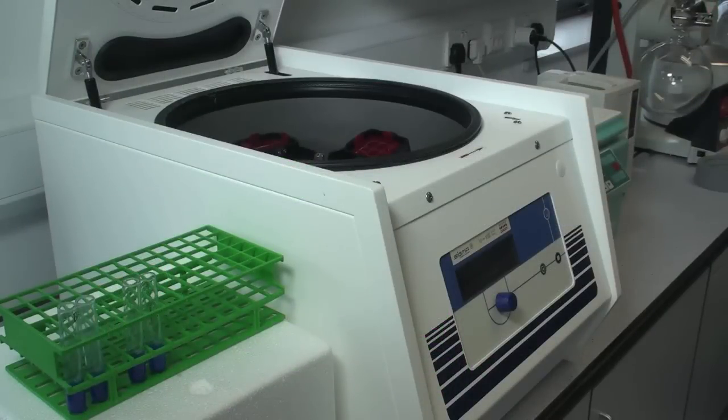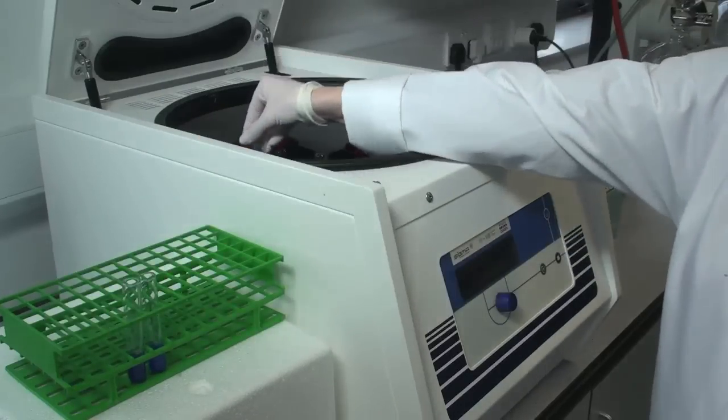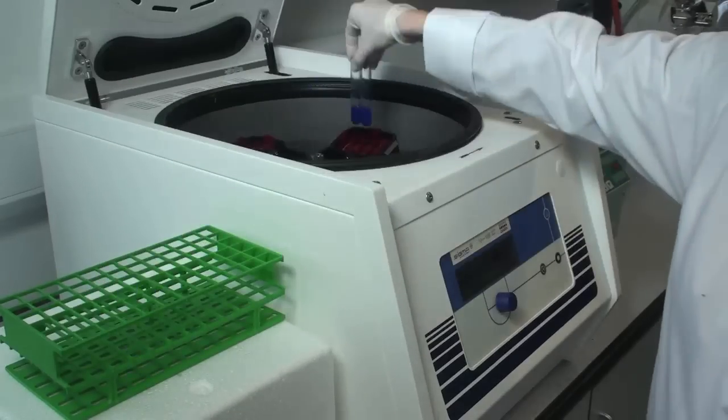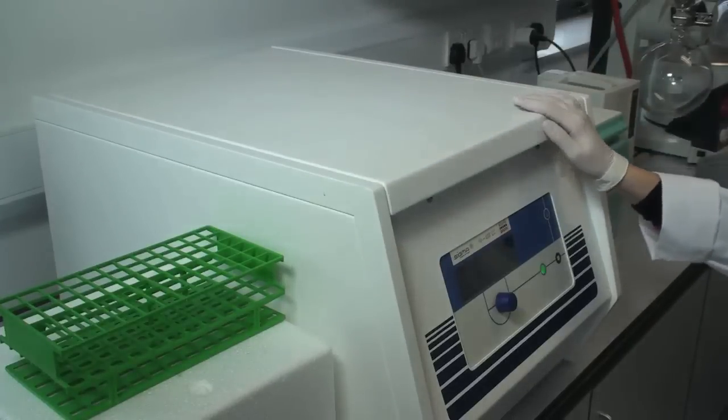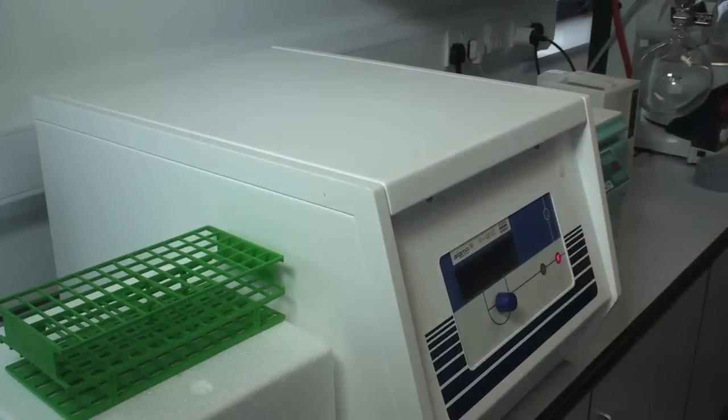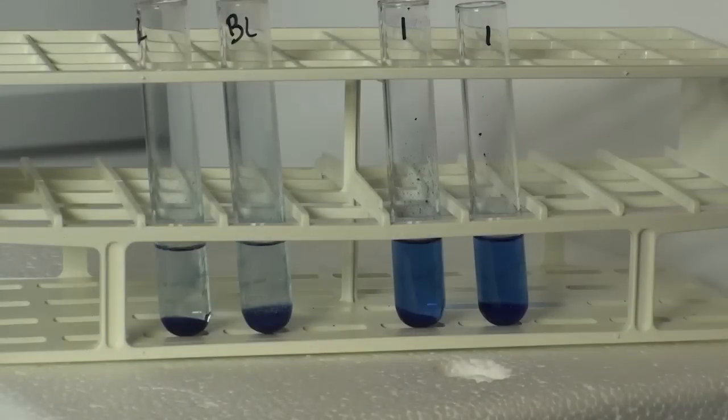Stir the contents again and then place the tubes in a centrifuge and centrifuge the tubes at 1000 g for 10 minutes. Remove the tubes from the centrifuge.